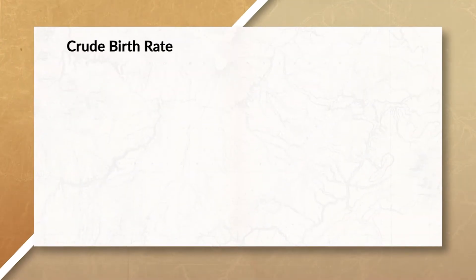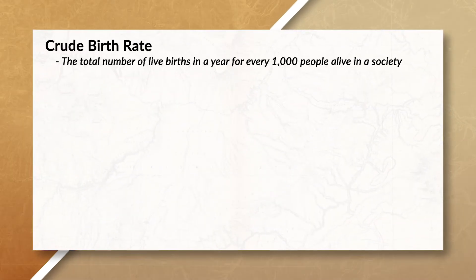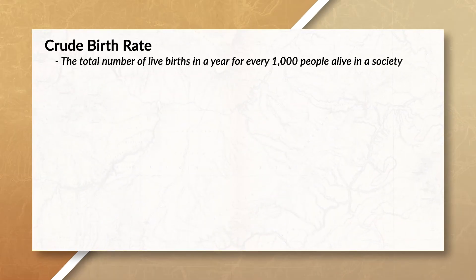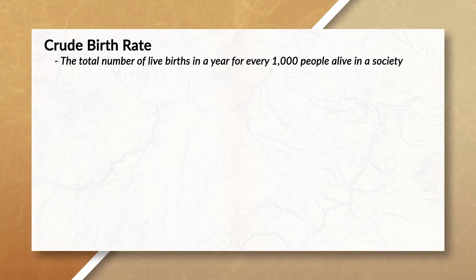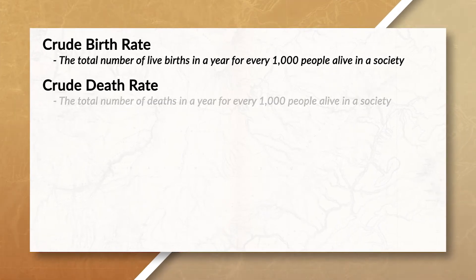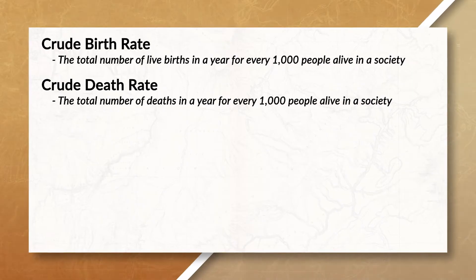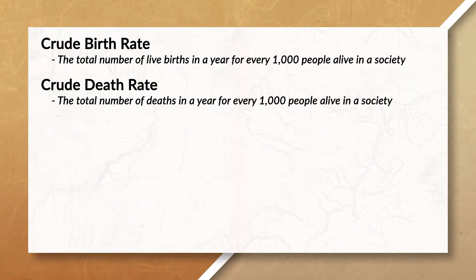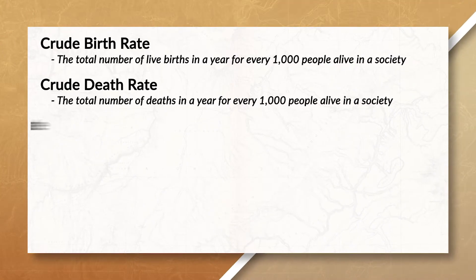Before we explore this question, we have to review a couple of important terms that you're going to be hearing not only throughout this video but throughout the rest of the course. Crude birth rate is the total number of live births in a year for every 1,000 people alive in a society. The crude death rate, on the other hand, is the total number of deaths in a year for every 1,000 people alive in the society.